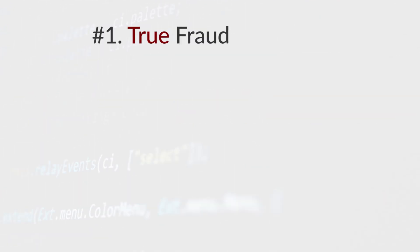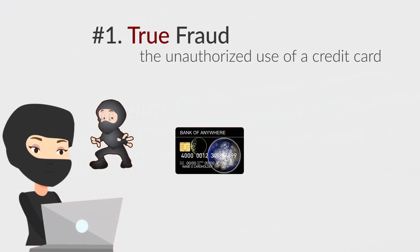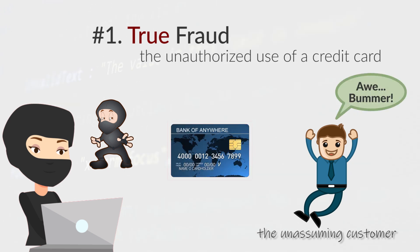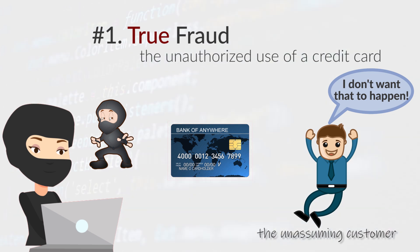The first of the three types is called true fraud, and this is the unauthorized use of a credit card without the cardholder's knowledge — basically, theft has occurred. A true fraud chargeback often results in the cardholder's credit card number being shut down and a new number being issued, due to the fact that the card number has been compromised and there's an increased likelihood of a repeat fraudulent transaction. This is the only category of the three where the cardholder is actually encouraged to call their bank first instead of trying to get in touch with the merchant to resolve the matter.